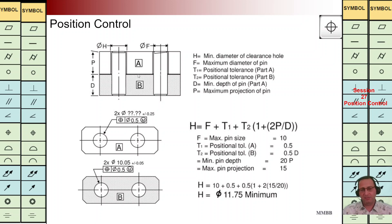In this next example we again have two parts A and B. We don't know what should be the hole diameter for part A. T1 is 0.5 and T2 is 0.5. Here for part B the projected tolerance zone is not considered, so we need to account for the effect of not having a projected TZ in the formula.